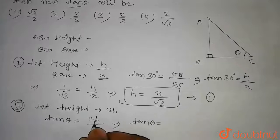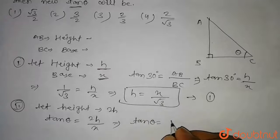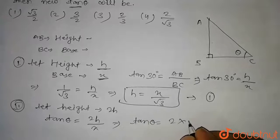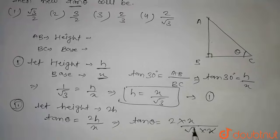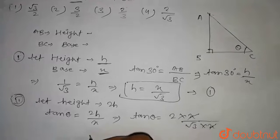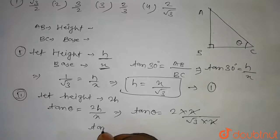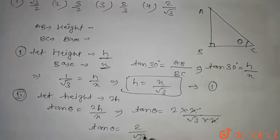And from equation 1, we have h equal to x by root 3. So we can write 2 into x by root 3, and this is x. This x and x will be cancelled. And we get tan theta equal to 2 divided by root 3.